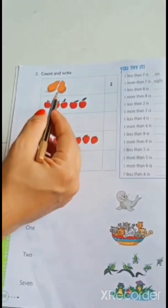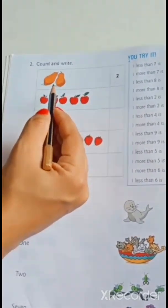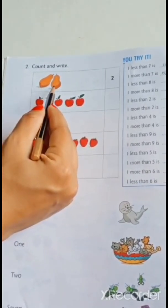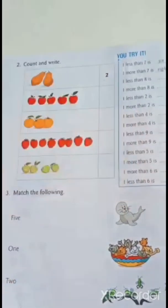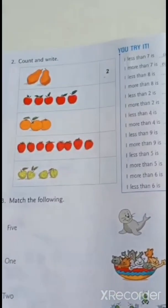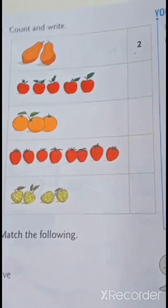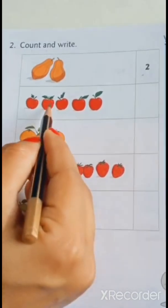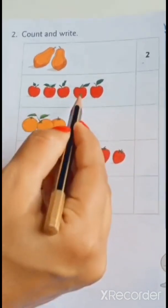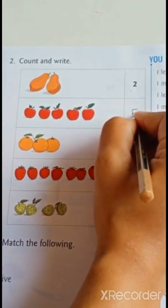First one. Papayas are given. How many papayas are here? Count. 1 and 2. So, 2 is written here. Next. What is given? Apples. How many apples are here? Count. 1, 2, 3, 4, 5. So, write down here. 5 with good handwriting. Like this.